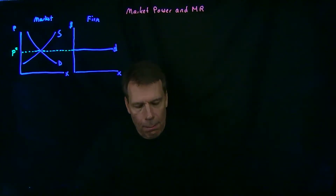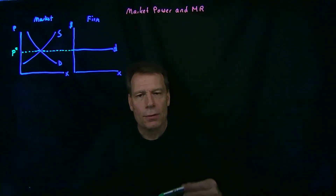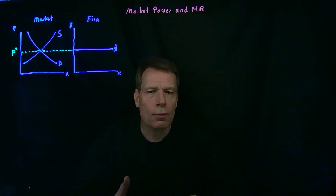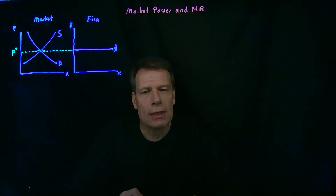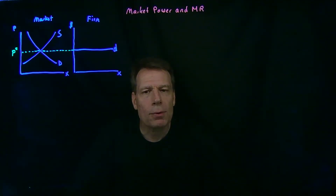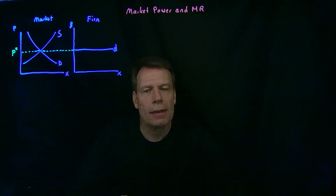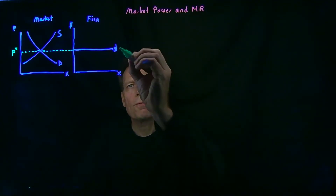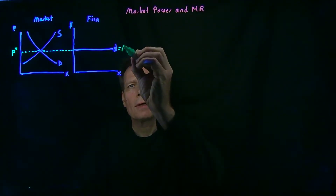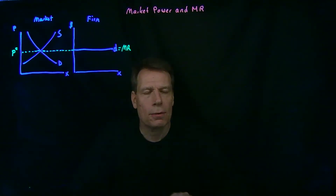As a result, the marginal revenue of producing one more unit for a perfectly competitive firm is just equal to the price. Each time you produce an additional unit, your total revenue increases by the price you sell that unit for, and that's the marginal revenue. So the marginal revenue curve is equal to the firm's demand curve.